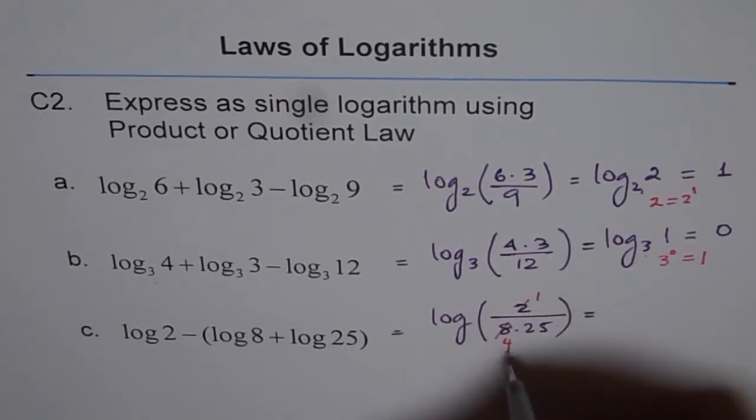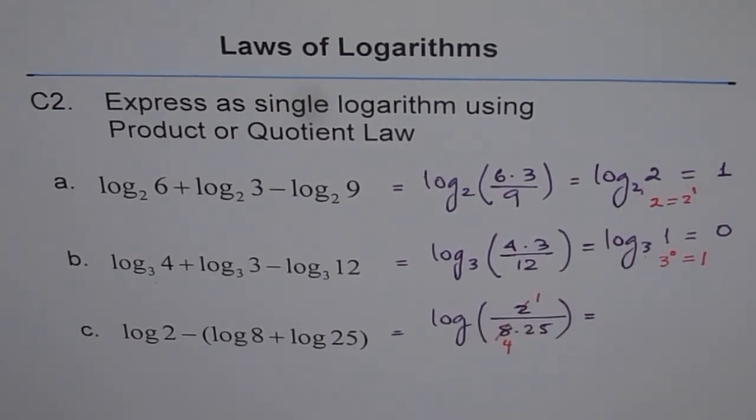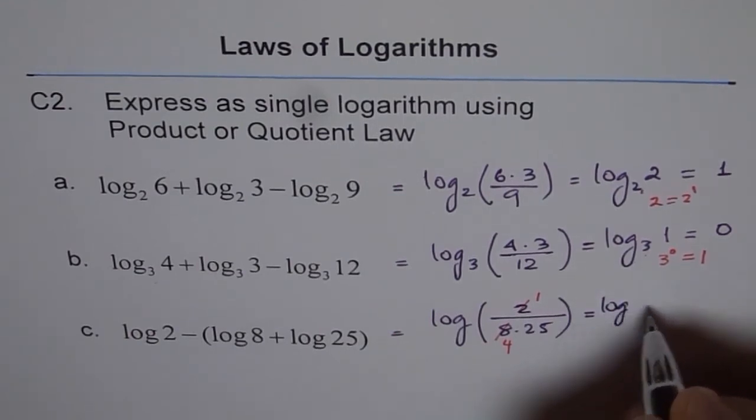2 times 1, 2 times 4, and 4 times 25 is 100. So what do I get here? I get log of 1 over 100.